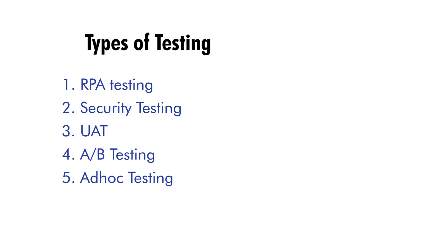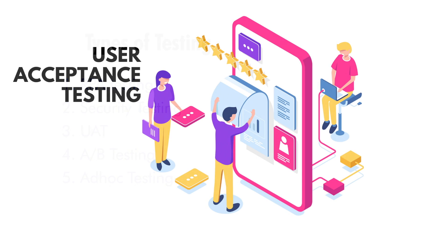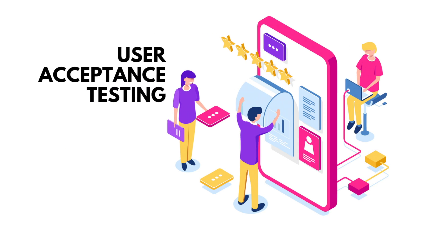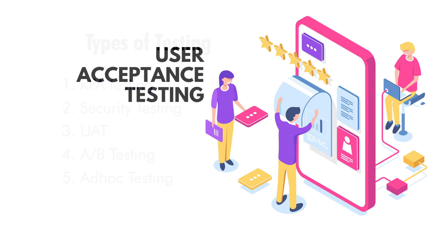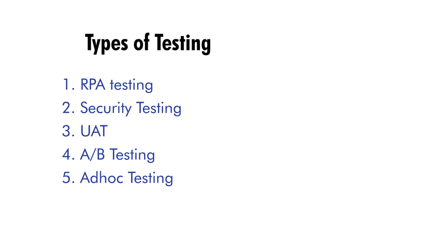By leveraging security testing methods, businesses can test the security levels of chatbots. This testing method helps to remove security loopholes and vulnerability issues. The third type is UAT — User Acceptance Testing. User satisfaction matters a lot for businesses today. To ensure the bots deliver a seamless customer experience, businesses must leverage UAT by including end users in the testing process, getting real-time feedback to improve product quality.